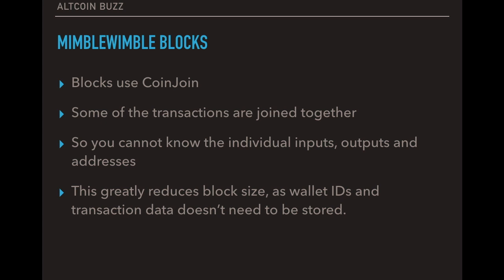So also, Mimblewimble will improve the blocks. So the blocks use CoinJoin, which is a technology that's already out there, so that some of the transactions are joined together. And the outputs are therefore different. So you cannot know the individual inputs, outputs, and addresses. Therefore, that greatly reduces the block size, because wallet IDs and transaction data isn't stored in the blocks. So it gives it privacy and it reduces the block size, giving it a much more scalable manner, which is brilliant for Bitcoin currently. And that is a really important and constructive piece of technology for Bitcoin in general.